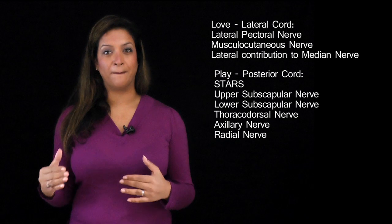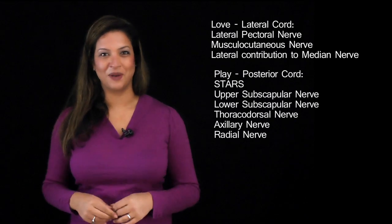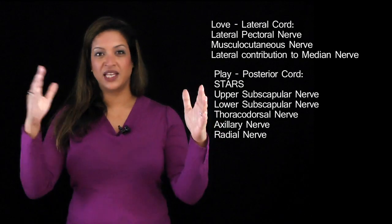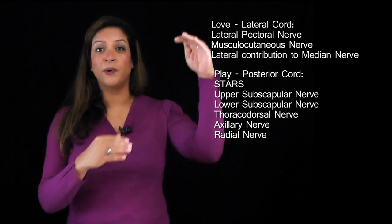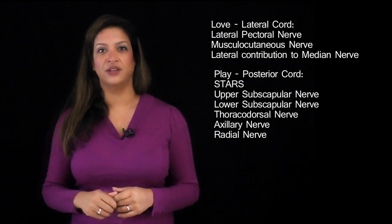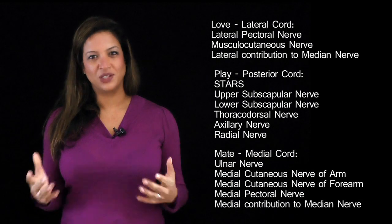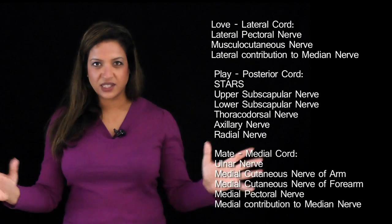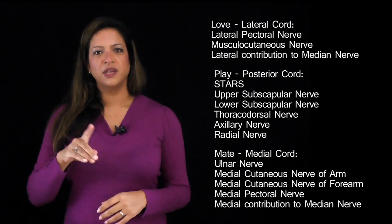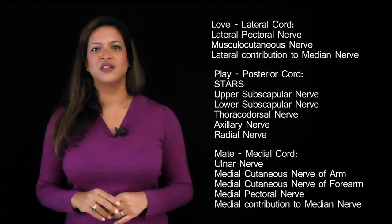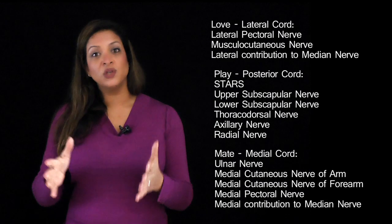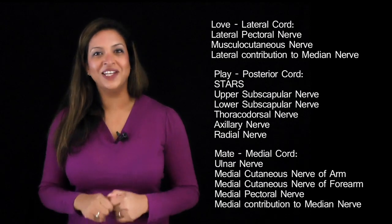Using the mnemonic Love Playmate — 3, 5, 5 branches. Lateral cord has 3 branches: lateral pectoral nerve, musculocutaneous nerve, and lateral contribution to the median nerve. Posterior cord has 5 branches via STARS: upper and lower subscapular nerves, thoracodorsal nerve, axillary nerve, and radial nerve. The medial cord also has 5 branches: the ulnar nerve — always think medial and ulnar together — then the medial cutaneous nerve of the arm, medial cutaneous nerve of the forearm, medial pectoral nerve, and medial contribution to the median nerve.